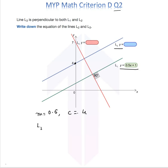Therefore, the equation of line L2 is y equals 0.5x plus 4.